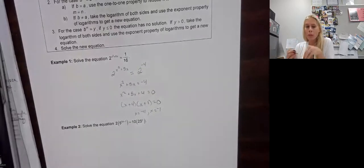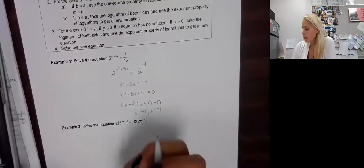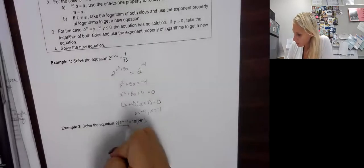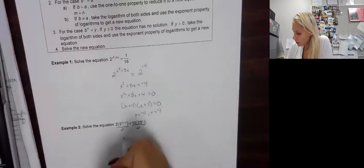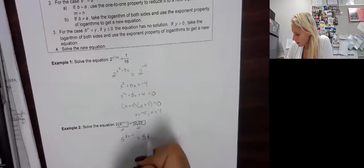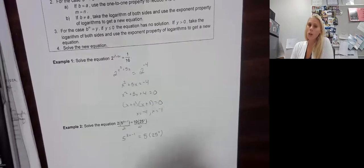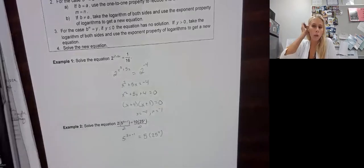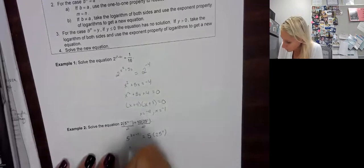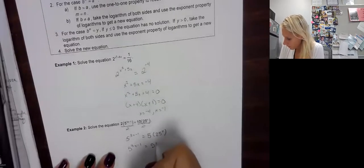Example 2, we have a little bit of a difference here because we have this 2 and the 10. The 2 and the 10 are being multiplied. So of course, the first thing we can do is divide both sides by 2. When we do that on the left side, we get 5 to the 3x minus 1 equals 5 times 25 to the x. Now, this is where I want you to be very careful. Remember that in order of operations, we have to deal with the exponent first before we divide or multiply. So do not multiply the 5 and the 25.